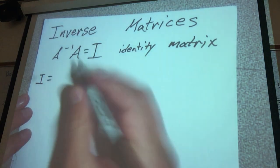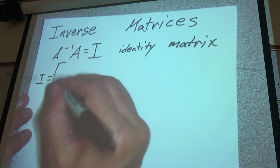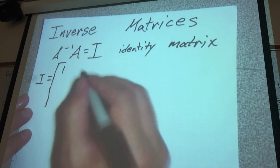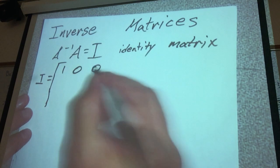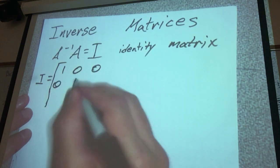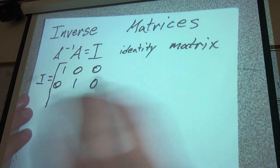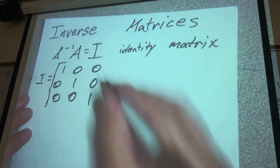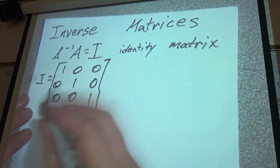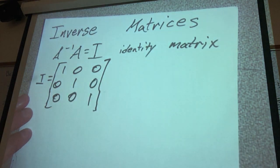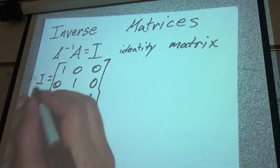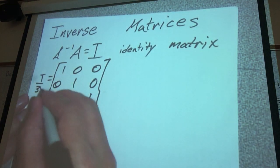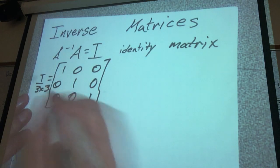So I, well if we do it as a 3 by 3, this is 1, 0, 0, 0, 1, 0, 0, 0, 1 — that's the 3 by 3 identity matrix.